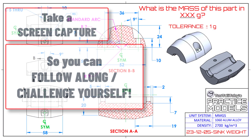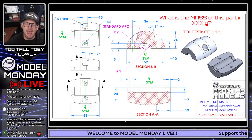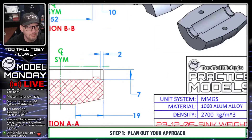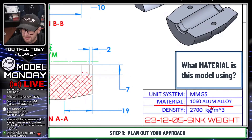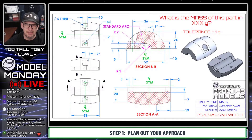We can see here that we are going to be modeling this using SOLIDWORKS, and the model is going to be this 23-12-05 sync weight. This is a model that I posted last week as a practice model. There were several people who commented and said it'd be really great to see a tutorial on this one. So let's go through and do a live solve. The very first thing I'm going to do is get my bearings — what are we asking for? We're asking for the mass of this part in grams with a tolerance of plus or minus one gram. Looking down in the title block, the material is 1060 aluminum alloy with a density of 2700 kilograms per cubic meter.